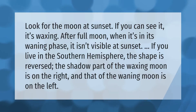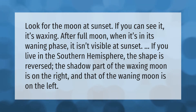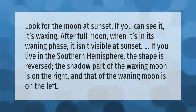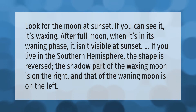Look for the moon at sunset — if you can see it, it's waxing. After the full moon, when it's in its waning phase, it isn't visible at sunset. If you live in the southern hemisphere, the shape is reversed: the shadow part of the waxing moon is on the right and that of the waning moon is on the left.